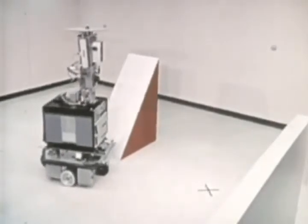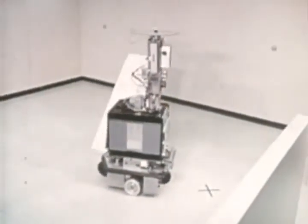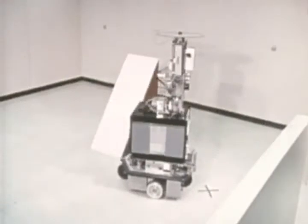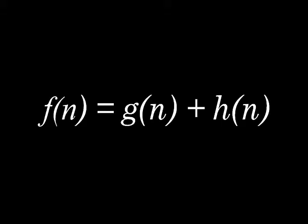Then Peter Hart and Bert Rafel and I together set about to prove Peter's conjecture, and that was the development of the A* algorithm, which involved this number associated with each node that was a sum of the distance from the start node to the node in question, plus the estimate of the distance from that node to the goal.